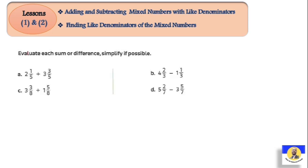First, if it says evaluate each sum or difference, simplify if possible. How can we make adding or subtracting mixed numbers? It's very easy — just like what we did with fractions. For example, 1/5 + 3/5 = 4/5. Then we add the whole numbers: 2 + 3 = 5. And that gives us the answer as a mixed number.